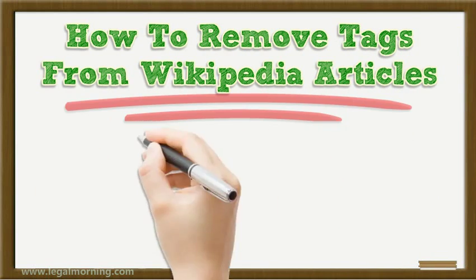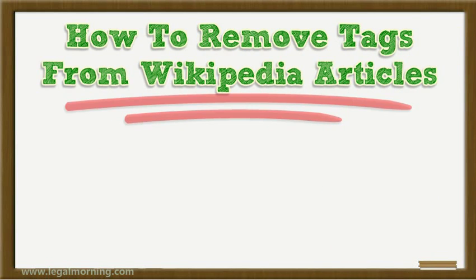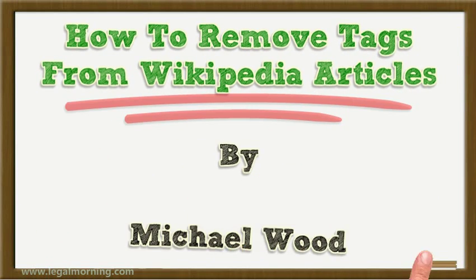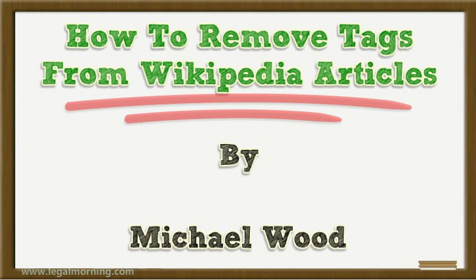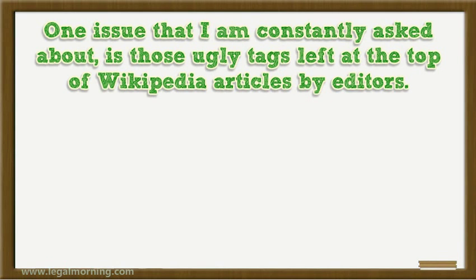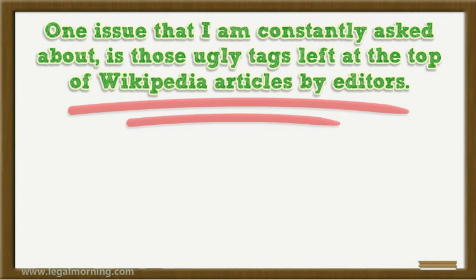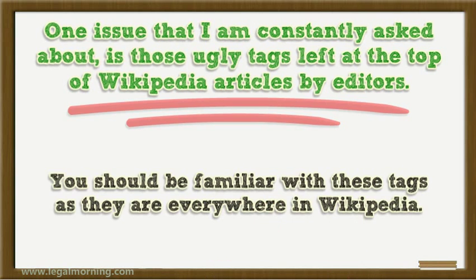How to remove tags from Wikipedia articles. One issue that I'm constantly asked about is those ugly tags left at the top of Wikipedia articles by editors. You should be familiar with these tags as they are everywhere in Wikipedia.